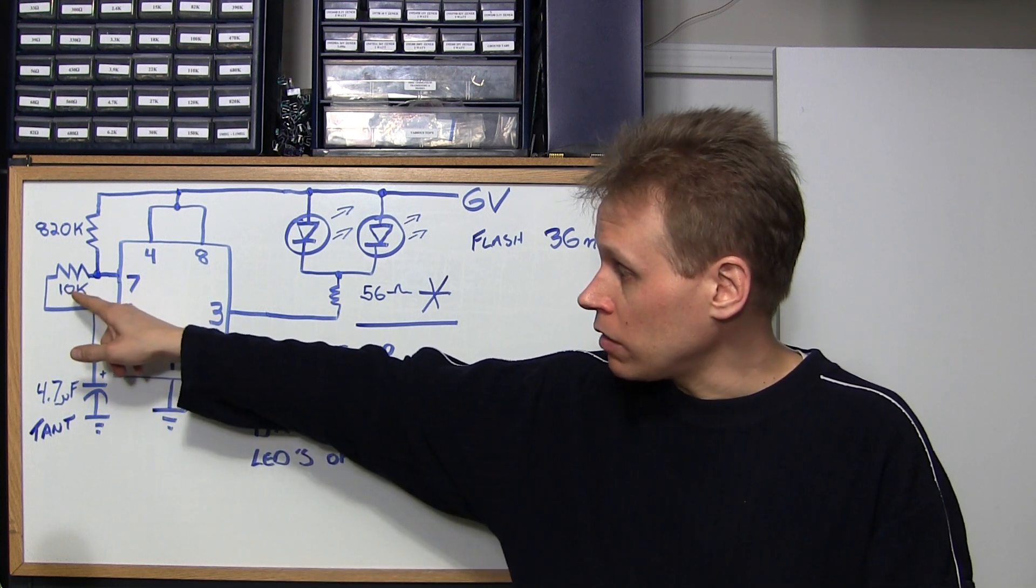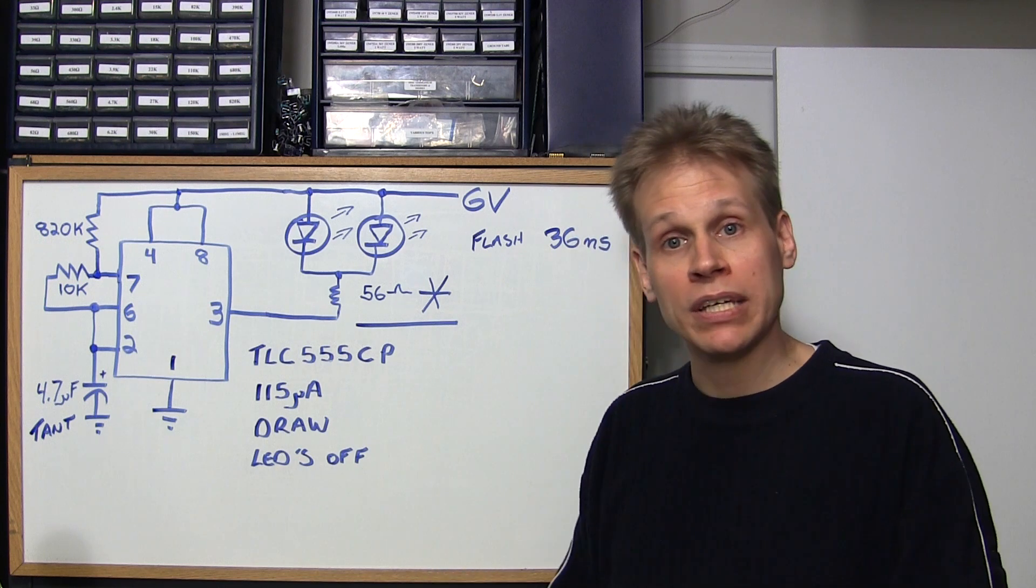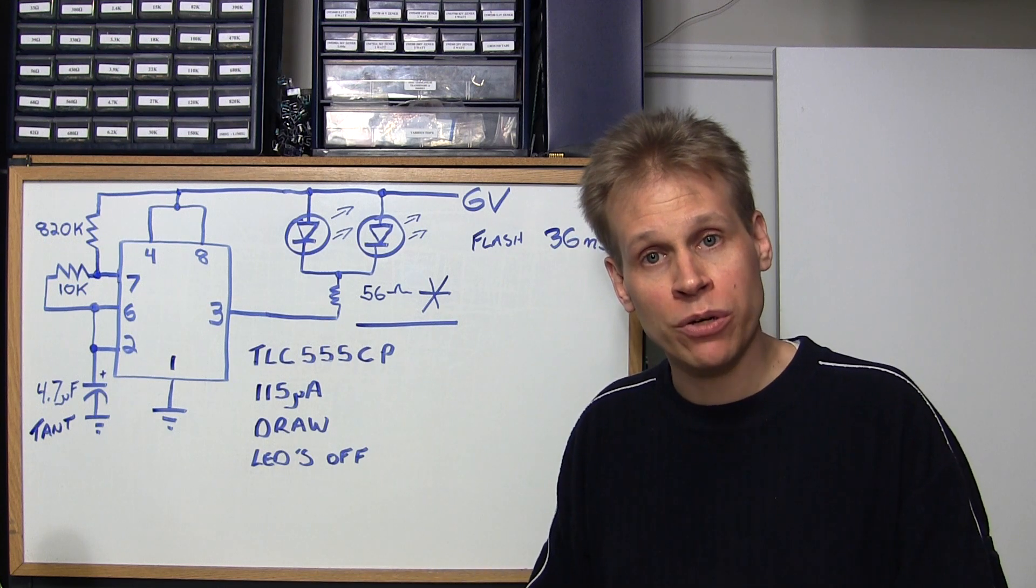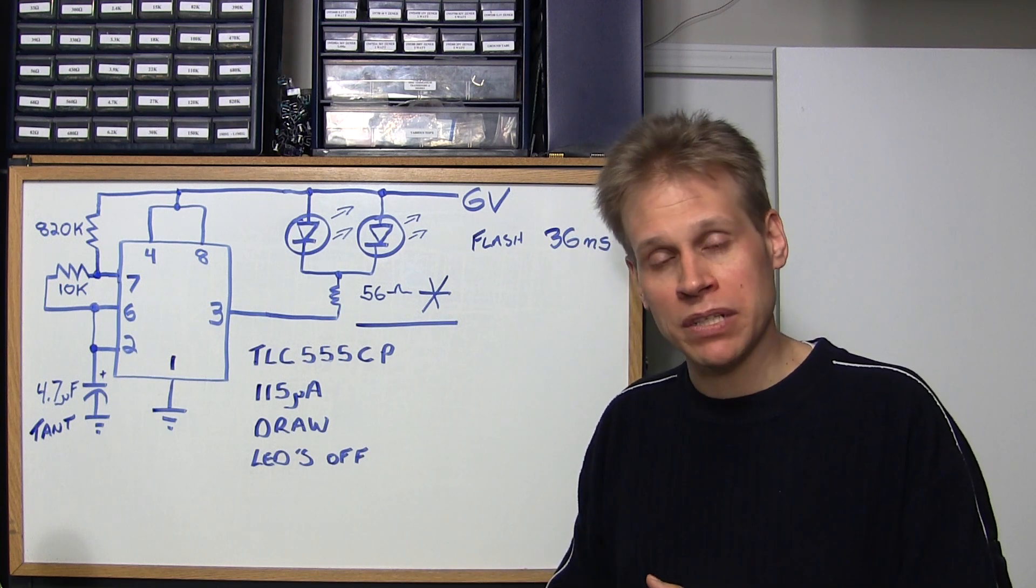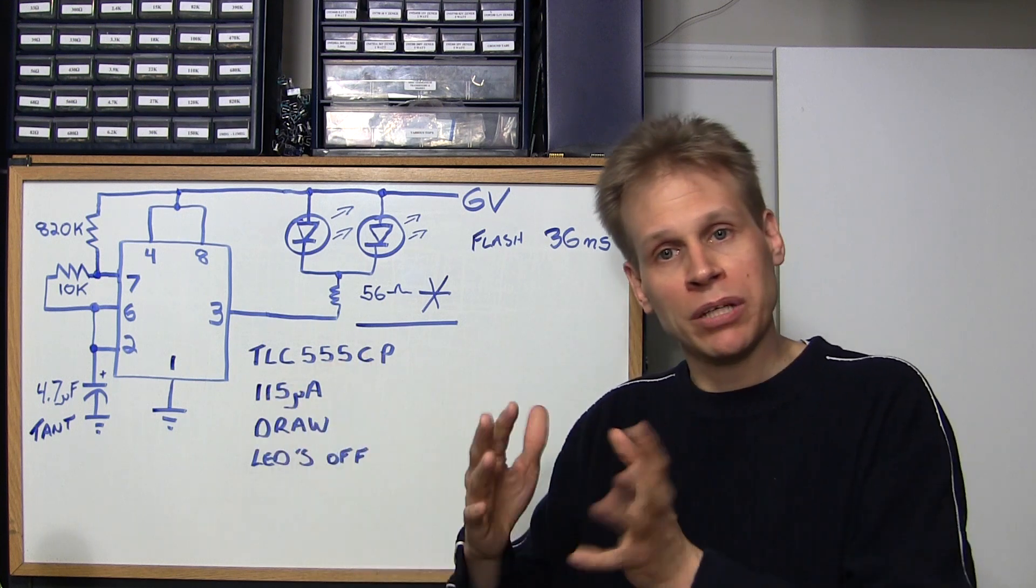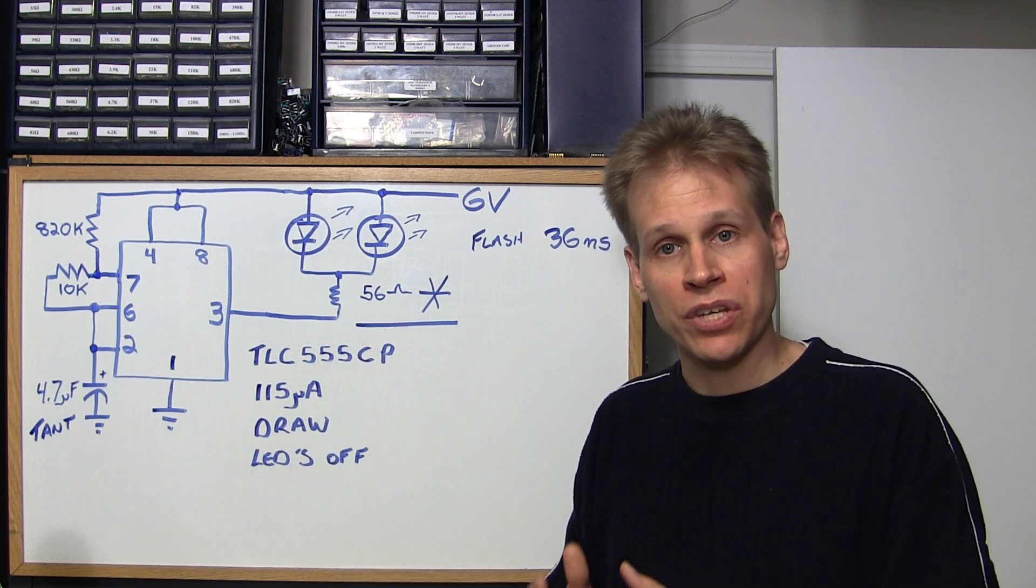If you wanted to take this down from 10k to say 4.7k the flash would be even faster but it appears a little bit dim to the eye that way. So I played again, I played with these values quite a bit to come up with this.